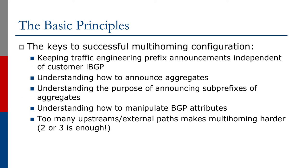The keys to successful multi-homing configuration are: keeping traffic engineering prefix announcements independent of prefixes we learn by IBGP from our access routers — the prefixes used by our customers. We need to understand how to announce aggregates and understand the purpose of announcing sub-prefixes of aggregates. We need to understand how to manipulate BGP attributes. And we need to realize that having too many upstreams, too many transit paths or external paths, will make multi-homing harder. As mentioned earlier, two or three transit providers is enough.